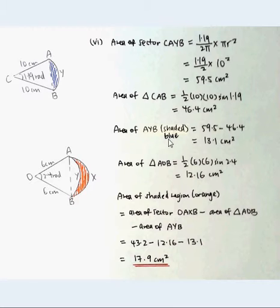Then for the area of AYB, which is shaded in blue, it equals 59.5 minus 46.4 equal to 13.1 cm².